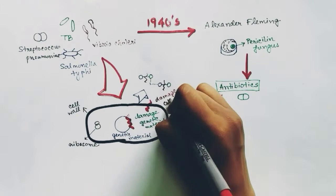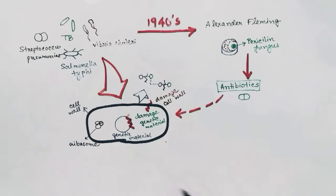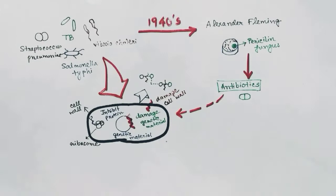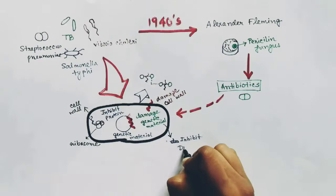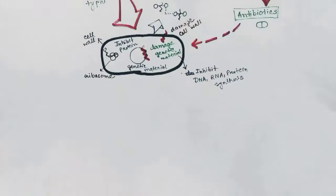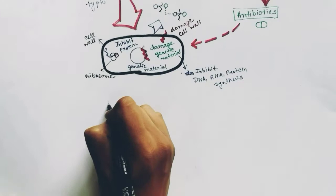Or it can also attach to the ribosomes of the bacteria and hinder the process of protein production inside the bacteria. The damage of the genetic material includes the inhibition of DNA, RNA, or the protein synthesis of the bacteria. And by all this, it can kill the bacteria.